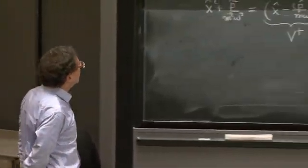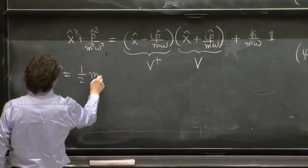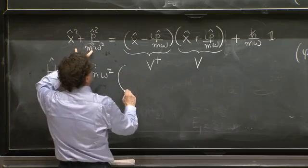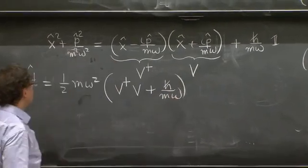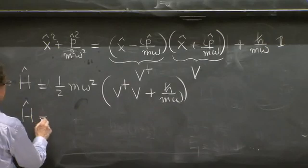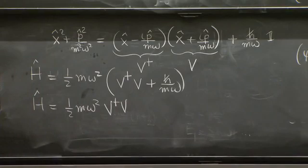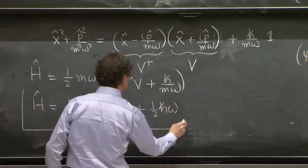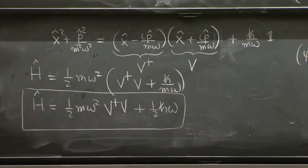So the Hamiltonian is 1 half m omega squared times this sum of squares, which is now equal to v dagger v plus h bar over m omega. So h hat is now 1 half m omega squared v dagger v plus a sum, which is plus 1 half h bar omega. So we did it. We factorized the Hamiltonian, v dagger v, and this is quite useful.